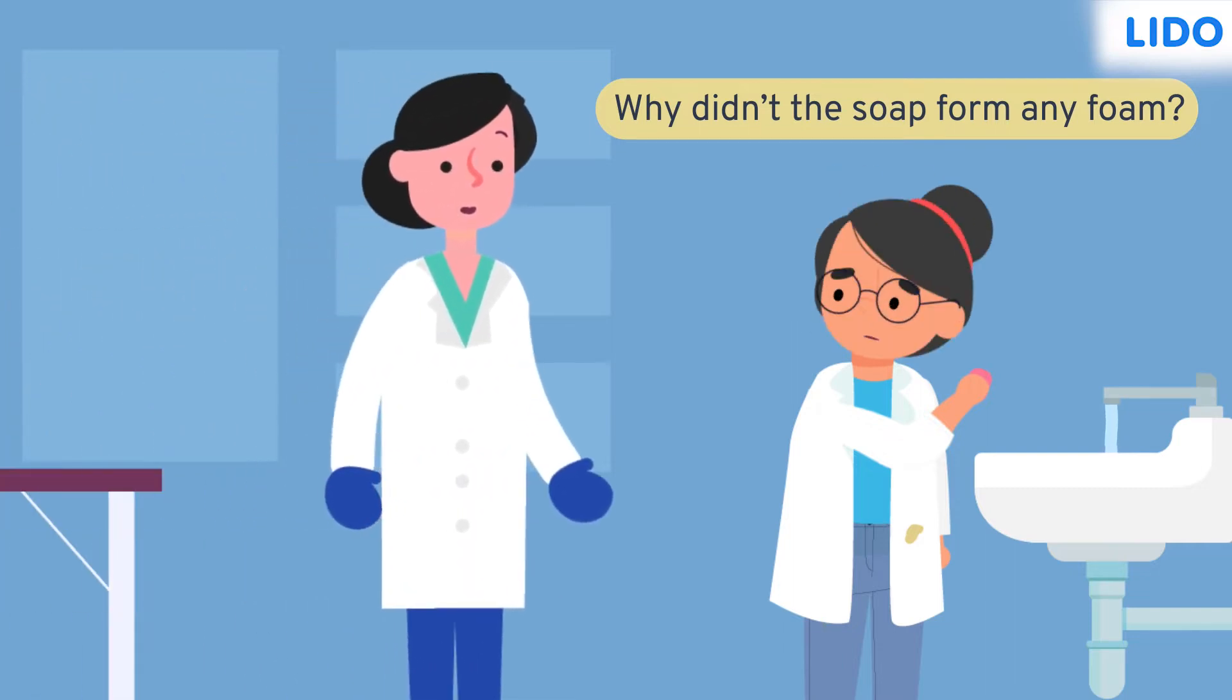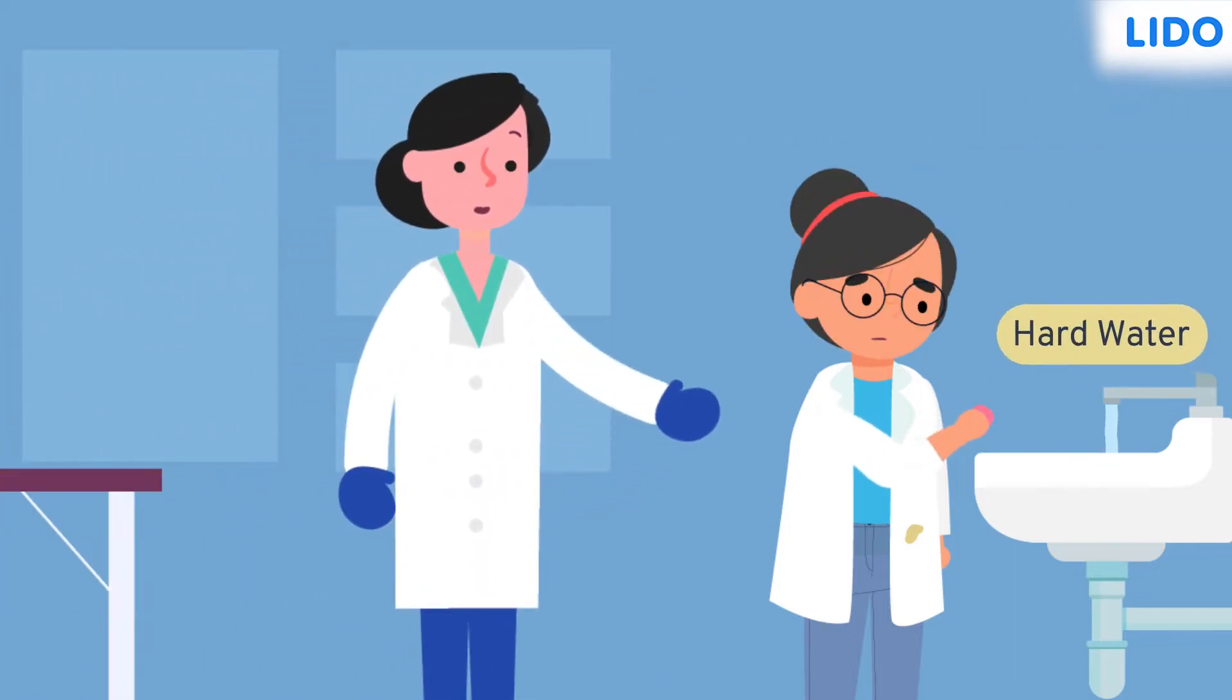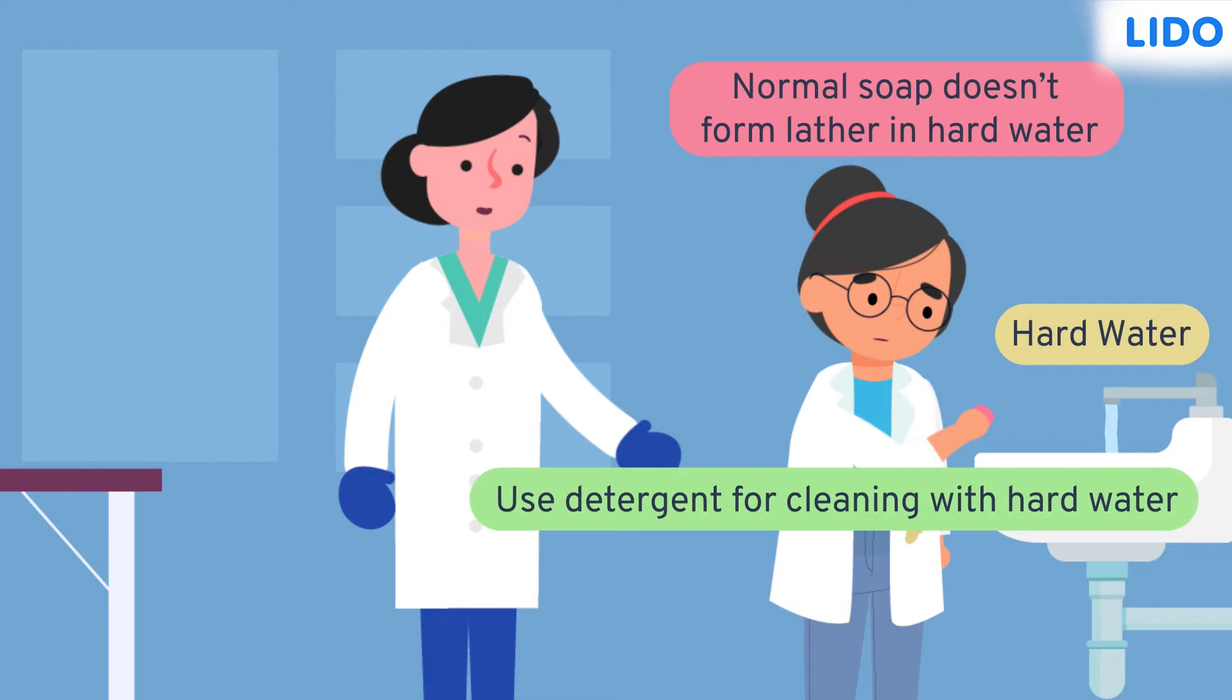That was when her chemistry teacher explained, the water coming from the tap is hard water and it does not form lather with normal soap. One must use detergent for cleaning with hard water. But how does detergent work to remove the stain? Let's dig deep and understand this.